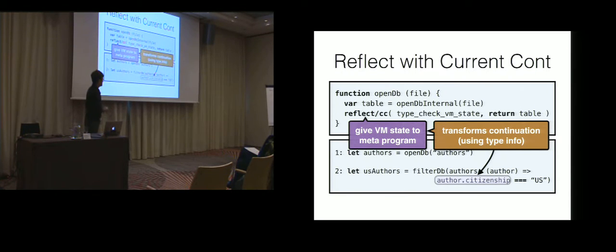Not only are they going to check the types, but they're also going to transform certain aspects of the continuation. So here, this line two and lines three and four are in our continuation, because we're currently executing OpenDB. And before we actually run this code, we want to change this field projection to be one of those certain kind that we know is going to work, that's going to be cheap, fast. So we do that as well. That's another role for Reflect CC.